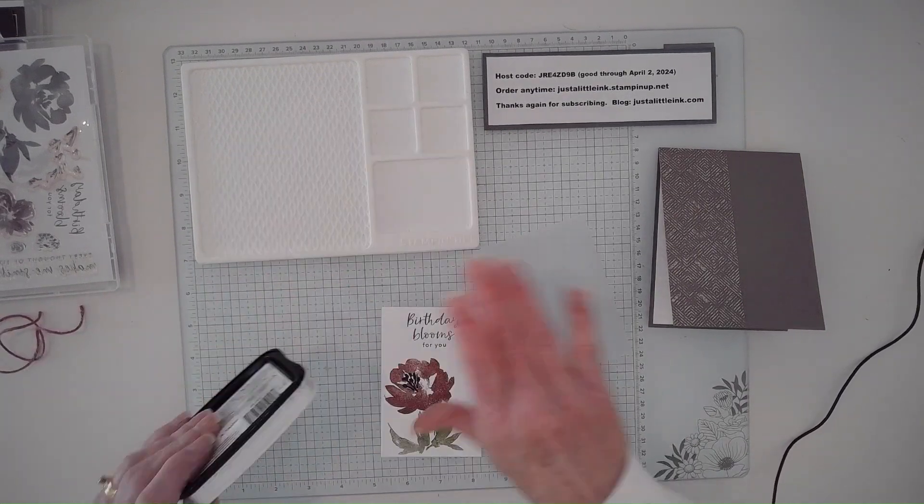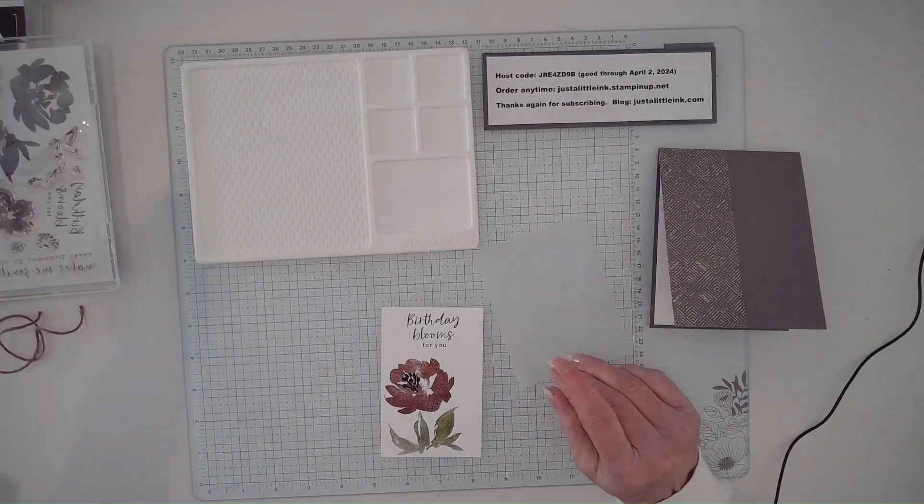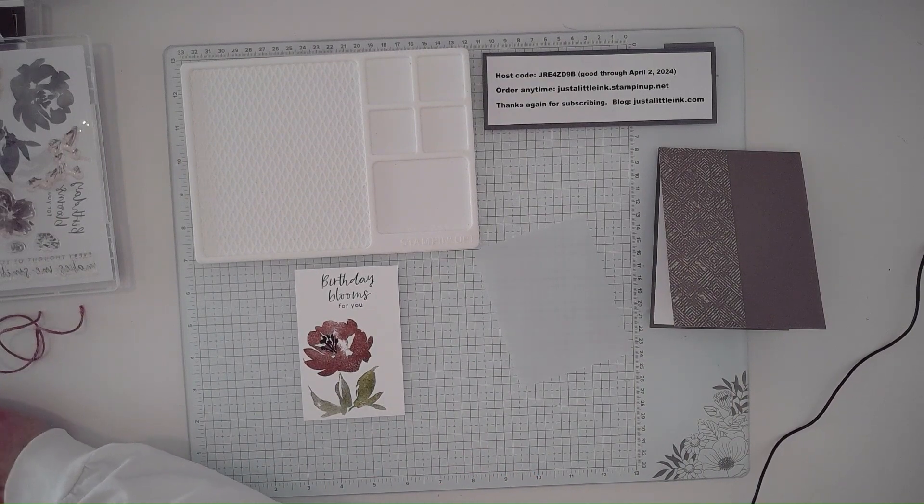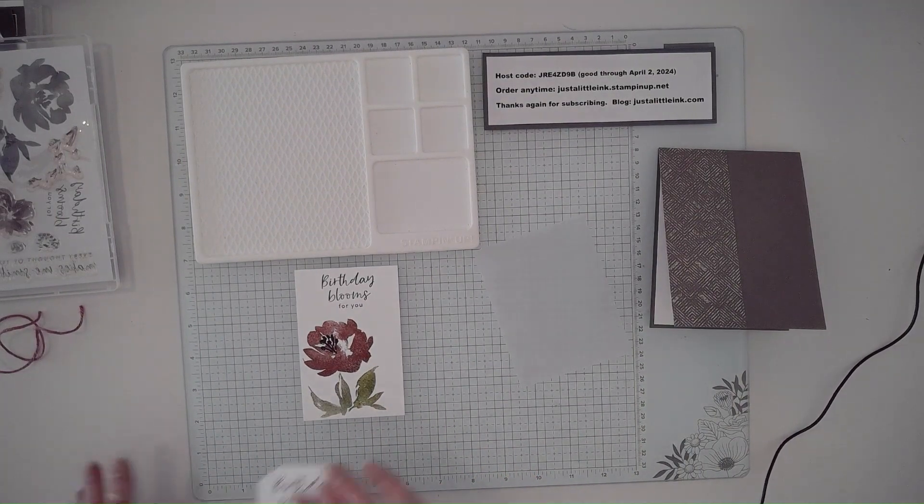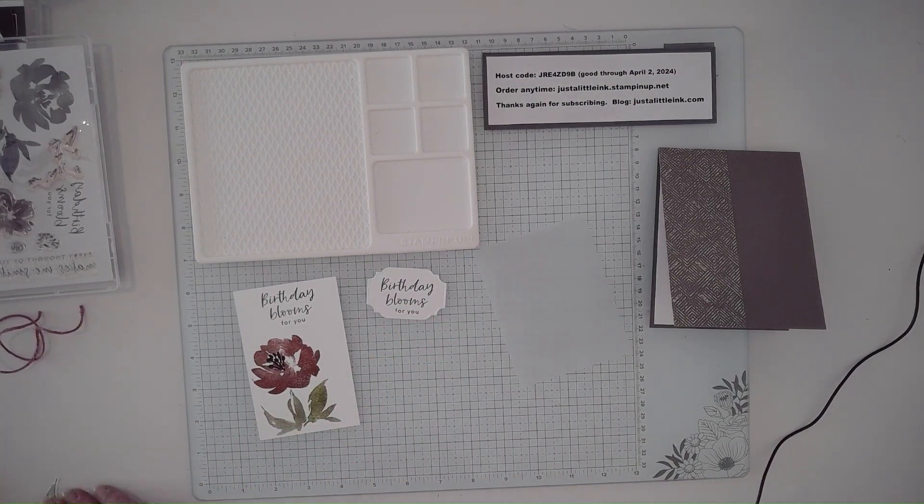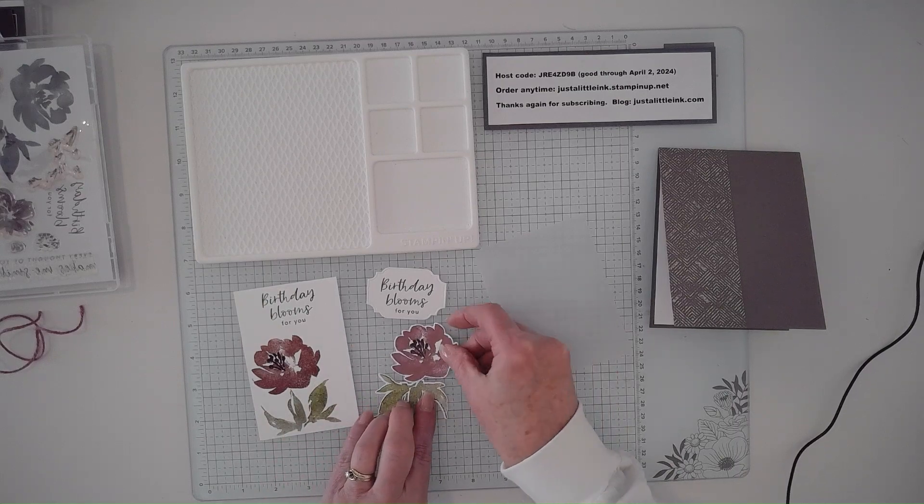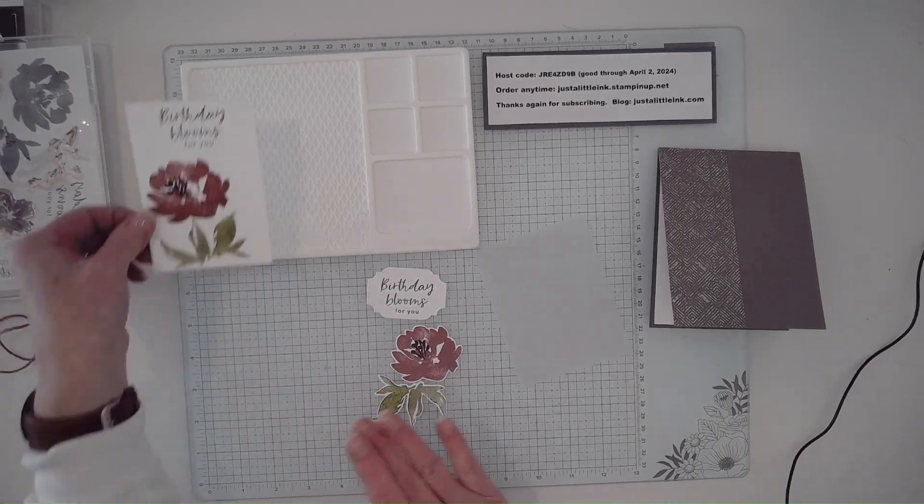I stamped originally in another color, and you'll see that with what I pulled out. I've already cut them out. These all have coordinating dies. I've got the Pebbled Path and then the two pieces here. So you can see how that works.